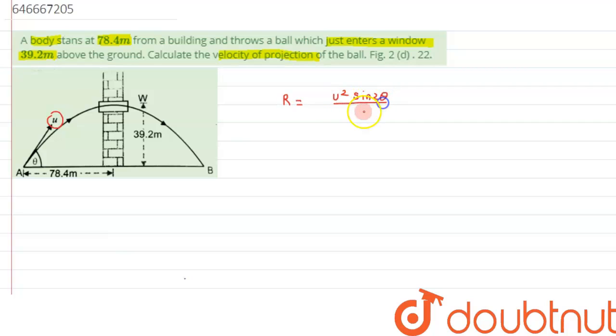And the height formula we can write as u square sine square theta by 2g. Alright, so this is the formula of height and range.